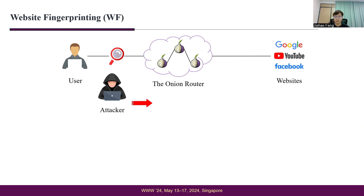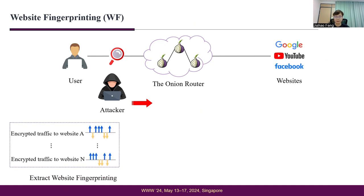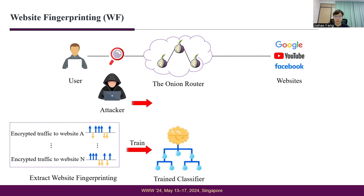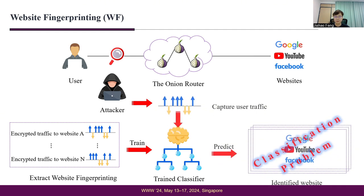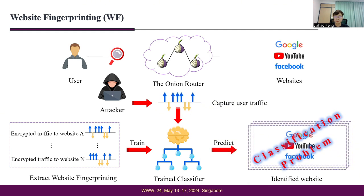Firstly, the attacker captures the traffic traces and extracts each website's trace features, called the website fingerprinting. Secondly, it obtains feature vectors and trains a website classifier. Thirdly, it sniffs the user's traces and utilizes the trained classifier to predict the visited websites.